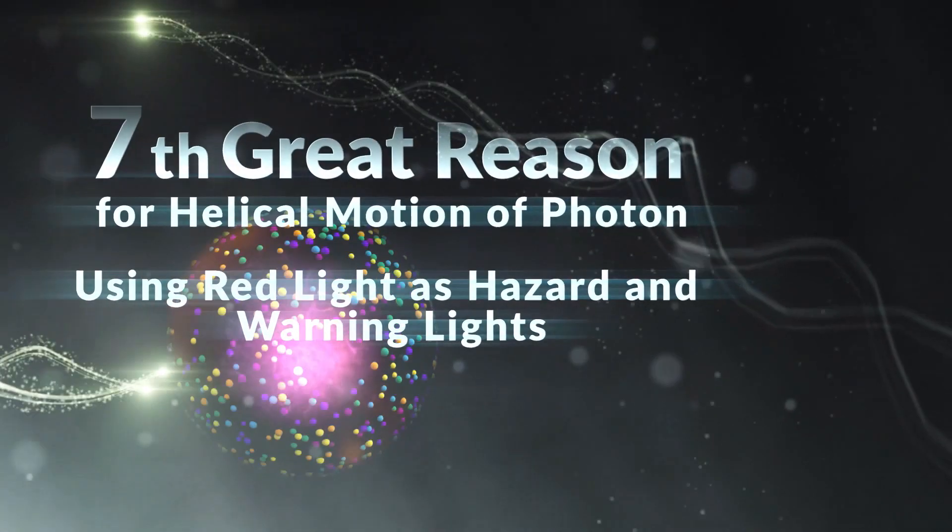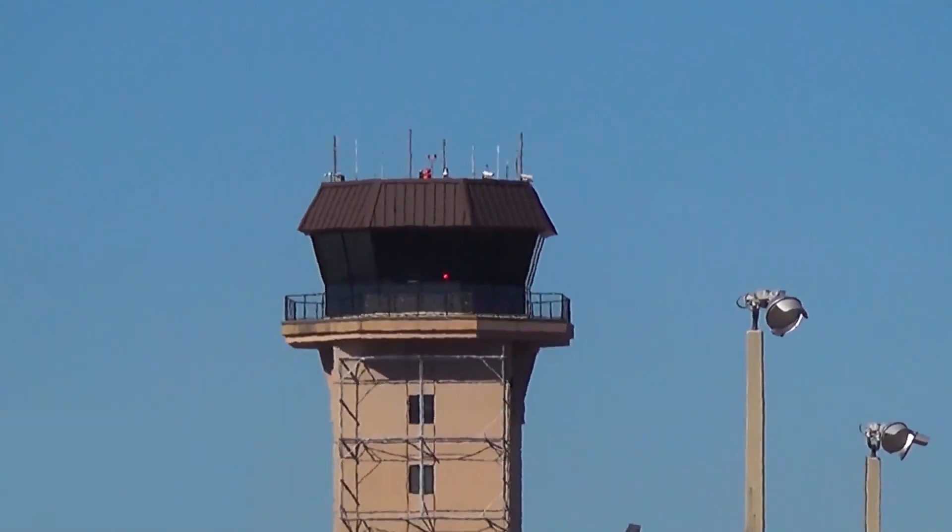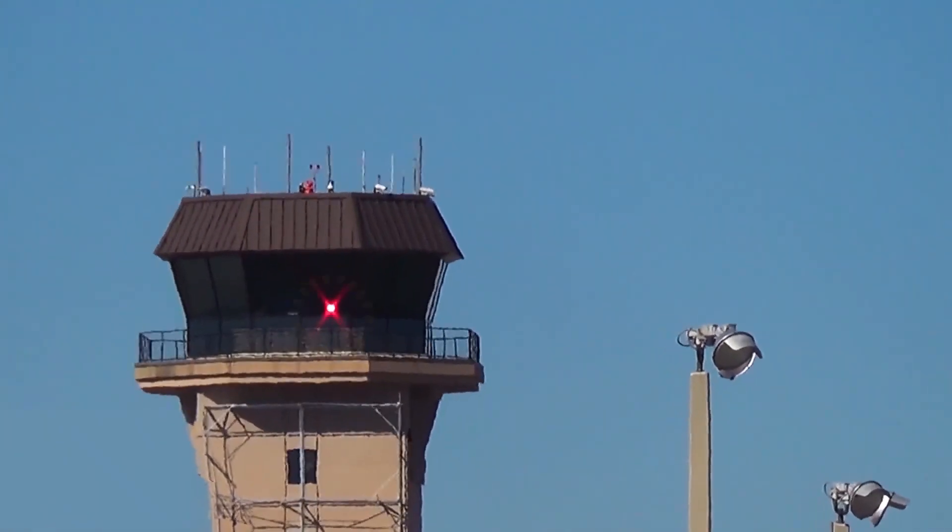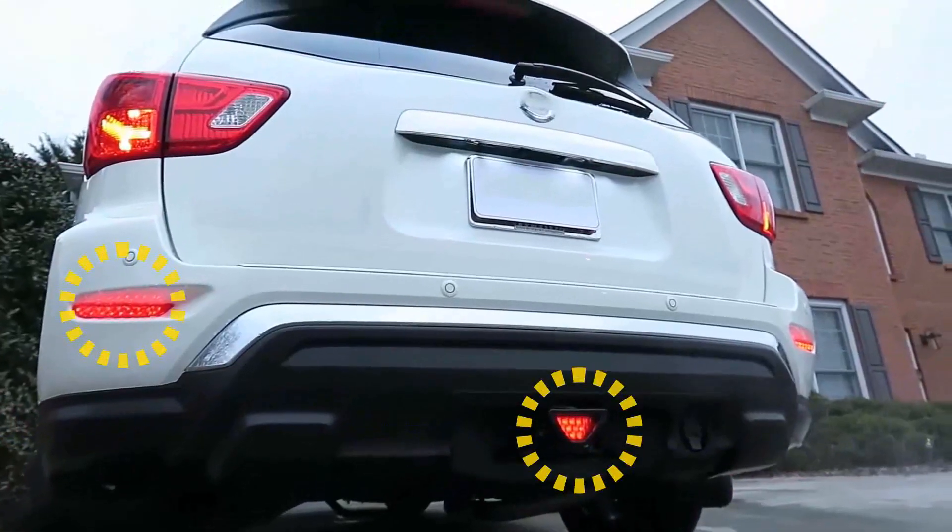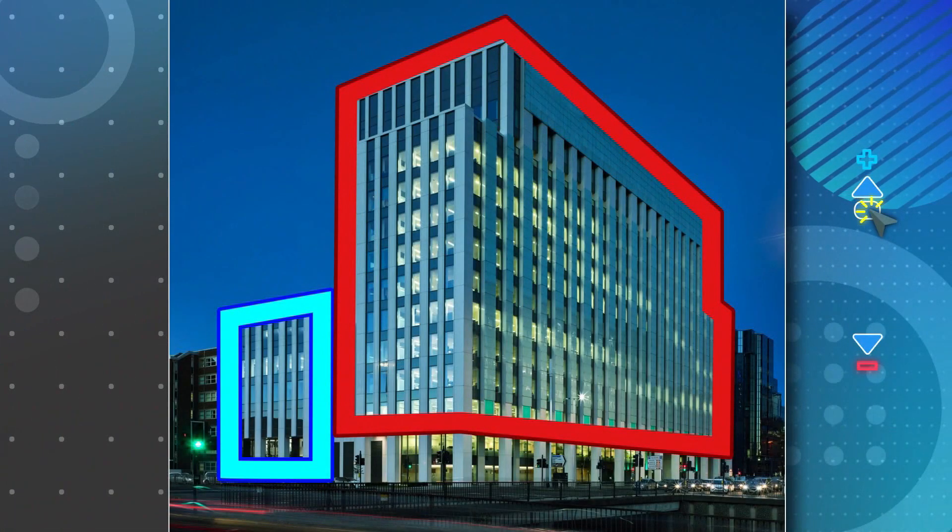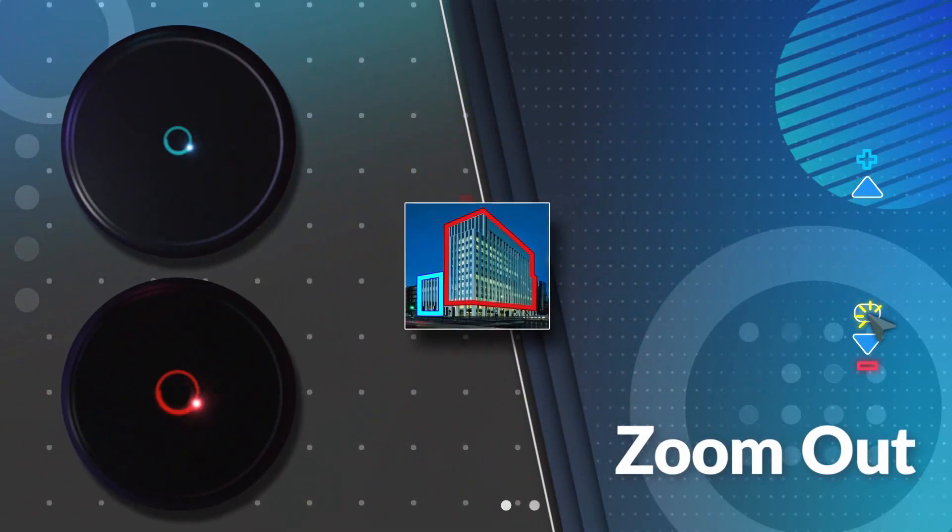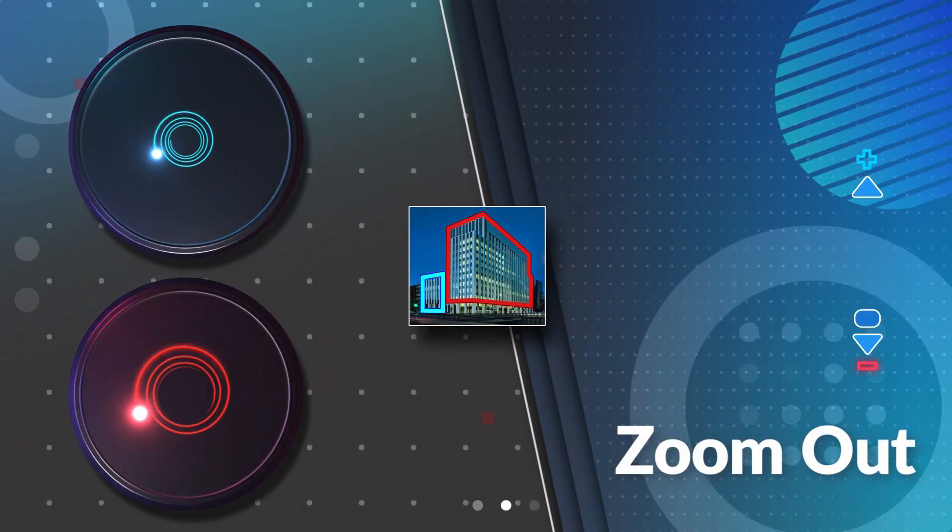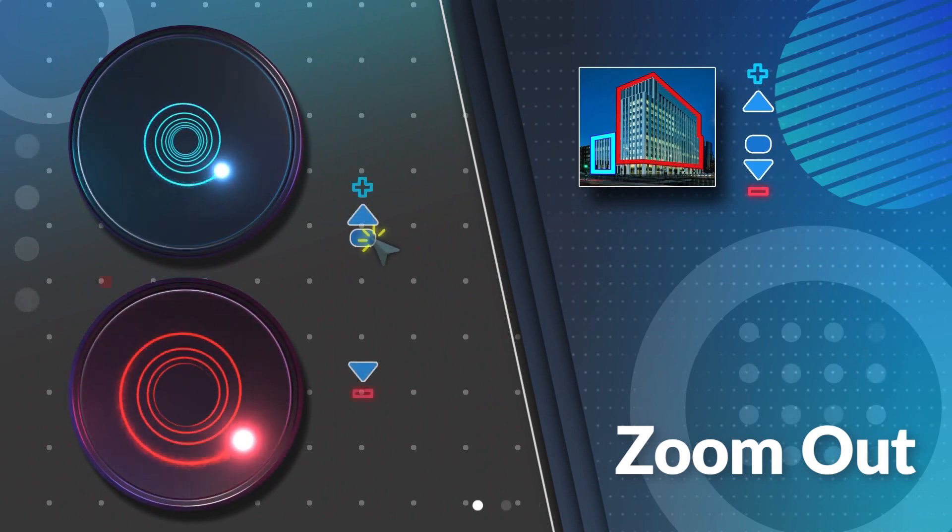7. Using Red Light as Hazard and Warning Lights. Visibility of red light in longer distances has become a reason to use as hazard and warning lights in different places. However, in wave-particle theory, the energy of the red light photons are considered to be less than that of blue light. But in Solich theory, the red light photon has larger gyro radius, and the result has more rotational energy than blue light.